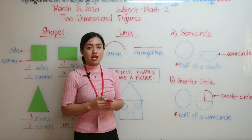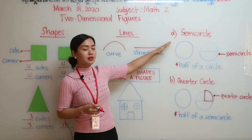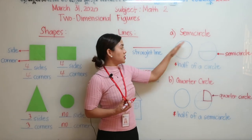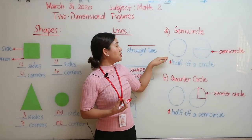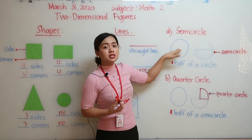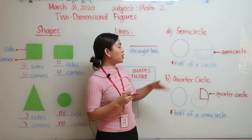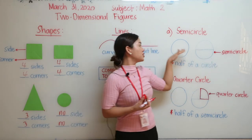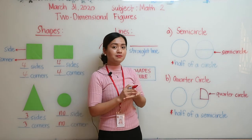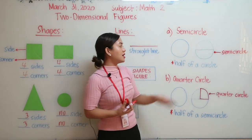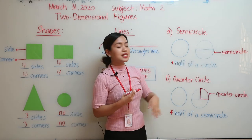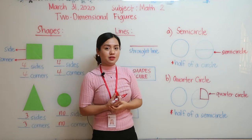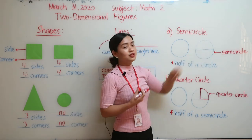We also have other shapes here — semicircle and quarter circle. Let's take a look at the circle. If we fold this circle in half, we are going to form a semicircle. In a circle, we can form two semicircles — one and two.